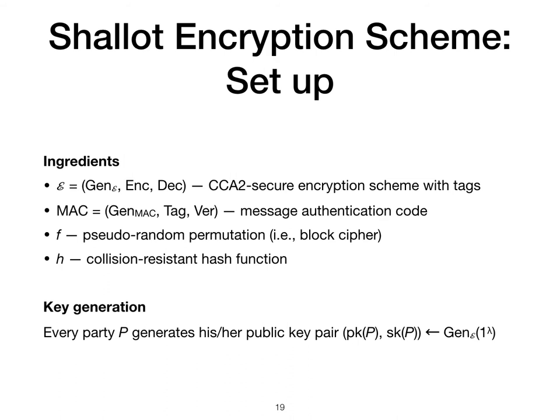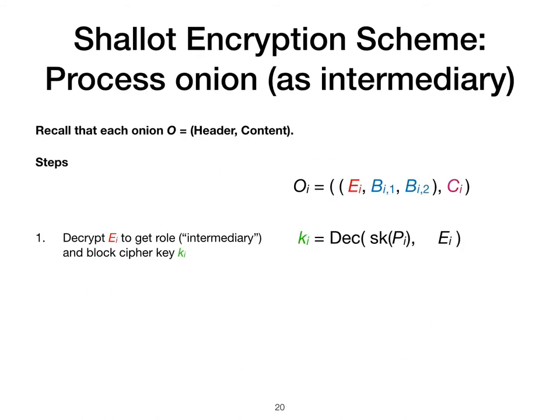Our construction is called the shallot encryption scheme because the onions it generates are pairs of layered encryption objects, and so in that respect these onions are more akin to shallots than onions. For the construction, we make use of the following cryptographic primitives: a CCA2 secure encryption scheme with tags, a message authentication code, a pseudorandom permutation or block cipher, and a collision-resistant hash function. Each party generates their key pair by running the encryption scheme's key generation algorithm.